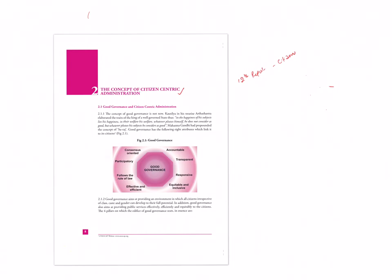Let us understand what is good governance. It is based on four pillars: ethos, ethics, equity, and efficiency. What are the ethos of the public service? That is service orientation. Public office is not an office of authority but an office of service and responsibility.